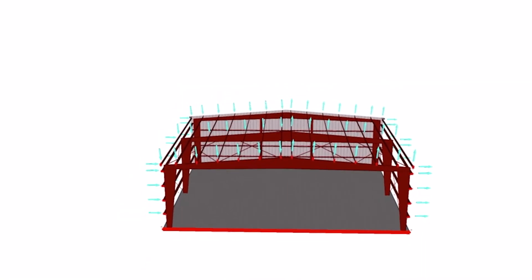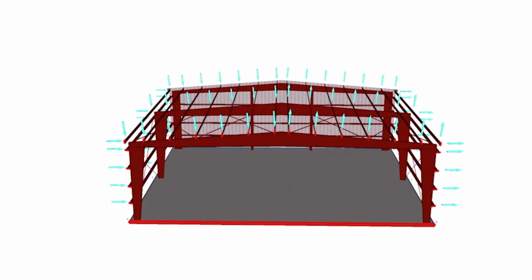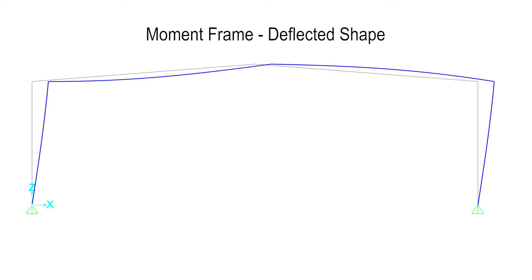Let's first take a look at a primary rigid frame. The deflected shape of the frame is shown to help visualize the behavior of the rigid frame. Positive and negative moments are created throughout the frame and are depicted on the diagram.